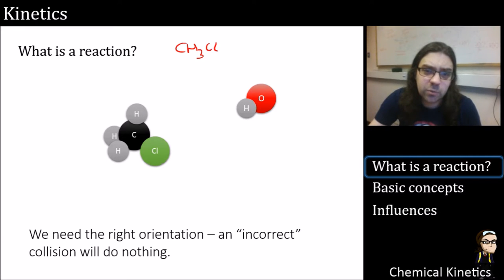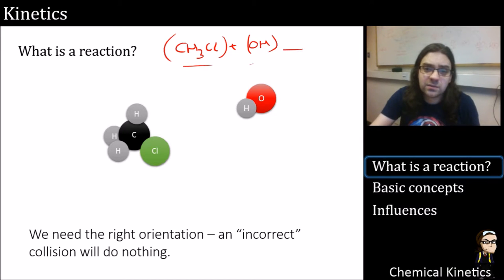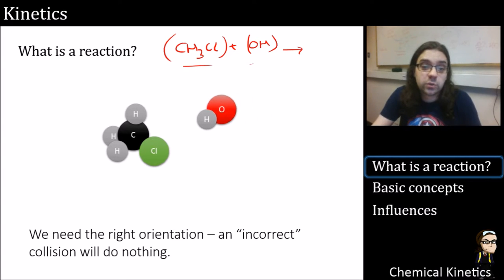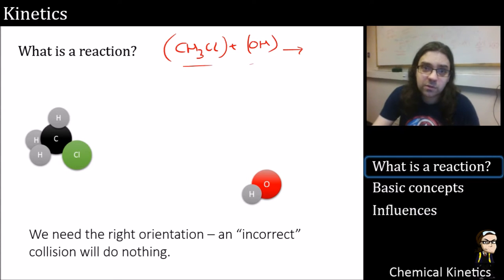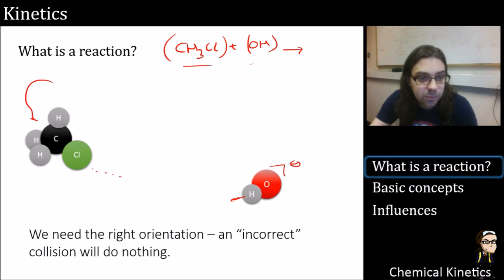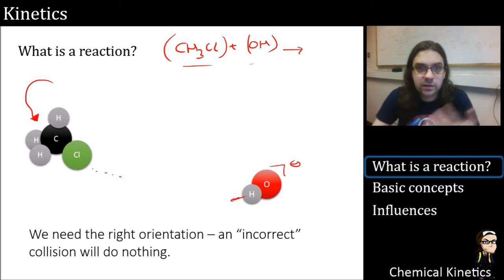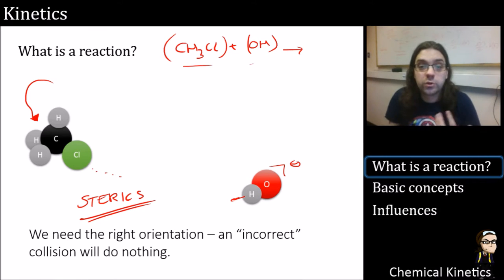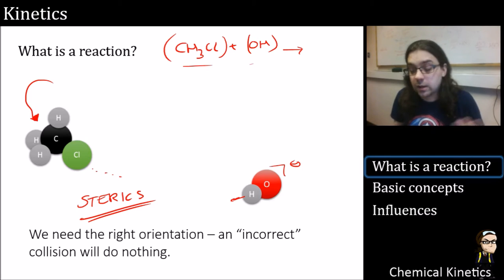As chemists we often forget that molecules are actual physical entities that have to hit each other — we just write things on paper. In reality they've got to collide with the right orientation. If they bounce around in the wrong place, it doesn't matter how fast they're going: a reaction won't happen. For instance, the H-side of a hydroxide can't interact with the Cl — it must come from the correct side. This is known as steric factors.